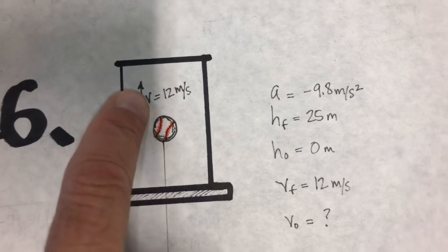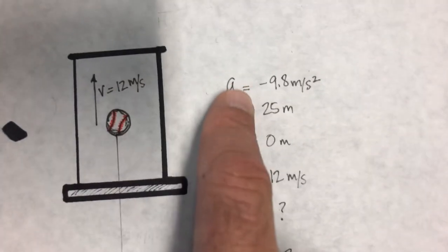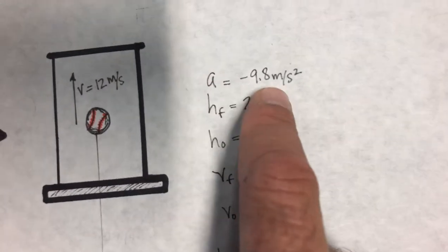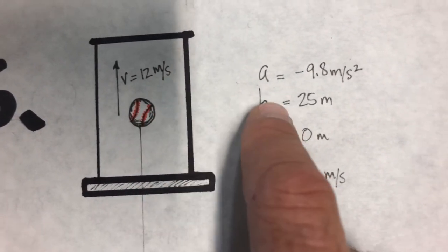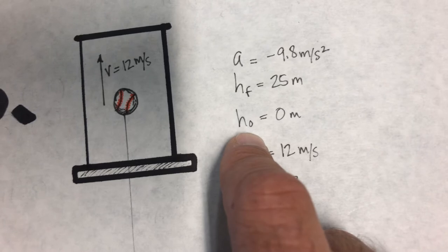So here's our baseball going by a window at 12 meters per second. Let's make our list. a is negative 9.8 m/s², height final is 25. That's where it lands, that's where we see it go by. Height...